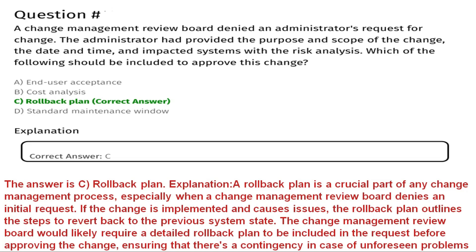Question four: a change management review board denied an administrator's request for change. The administrator had provided the purpose and scope of the change, the date and time, impacted systems, and the risk analysis. Which of the following should be included to get this change approved? Option A: end-user acceptance. Option B: cost analysis. Option C: rollback plan. Option D: standard maintenance window. The correct answer is C, rollback plan.